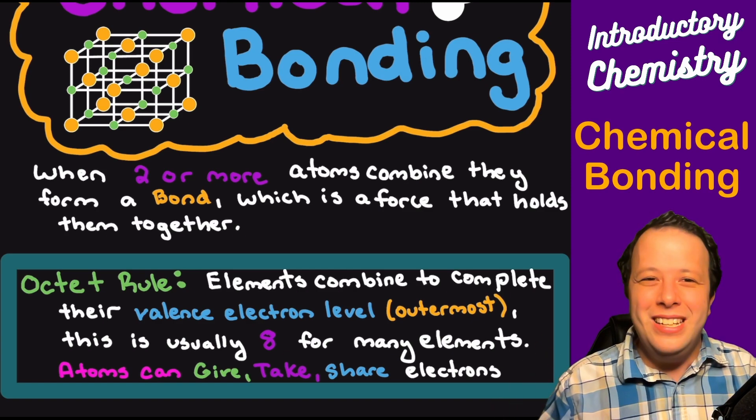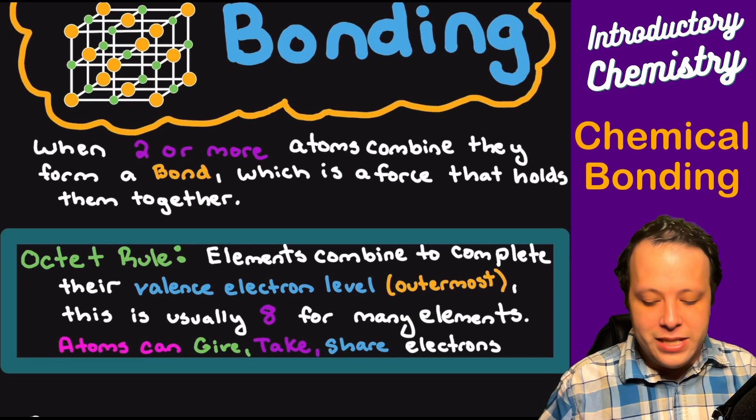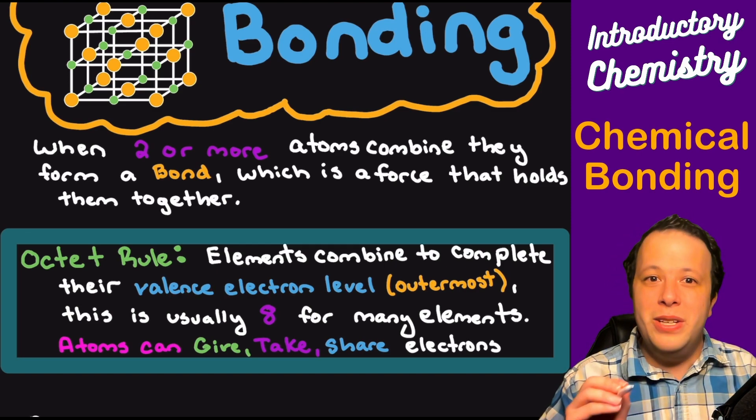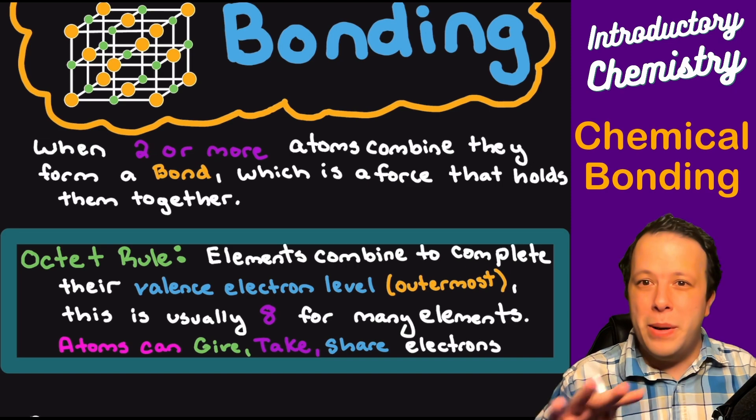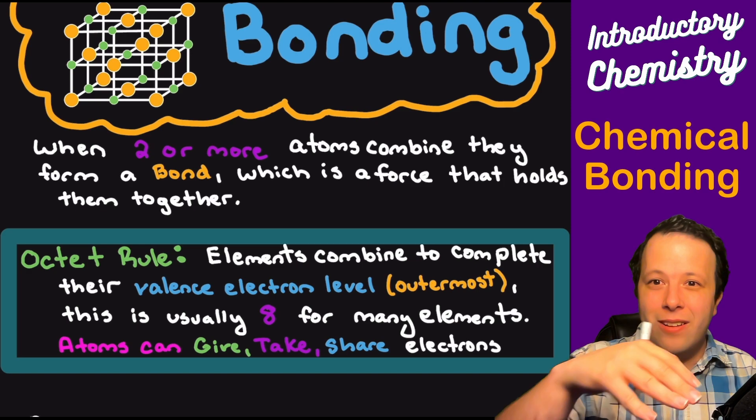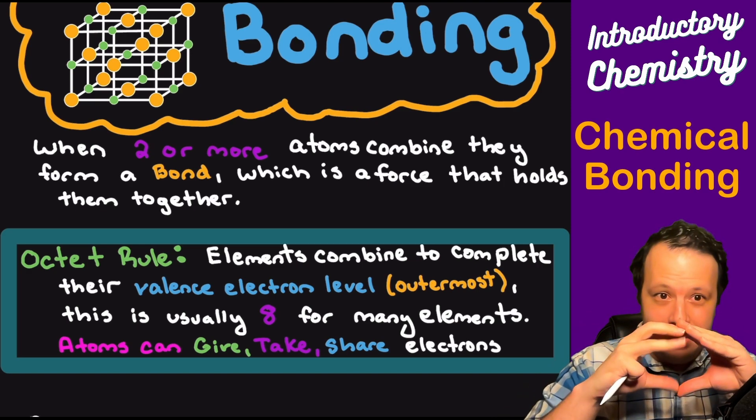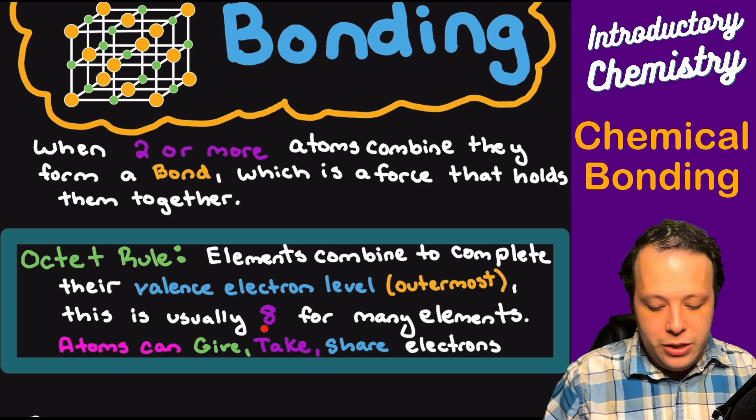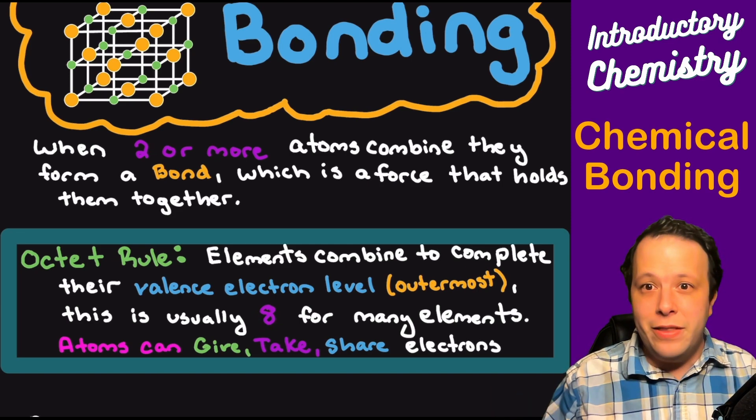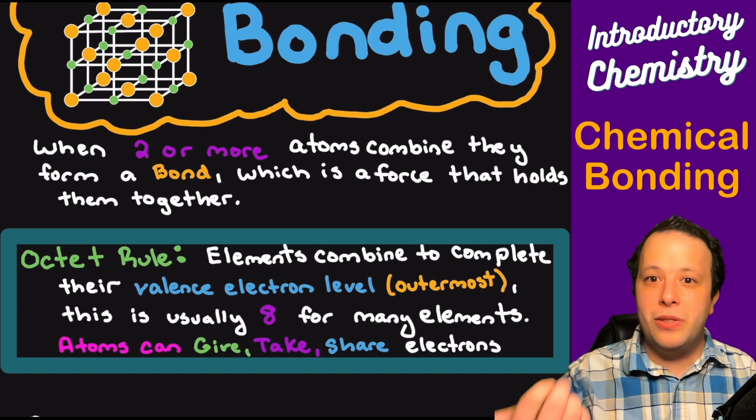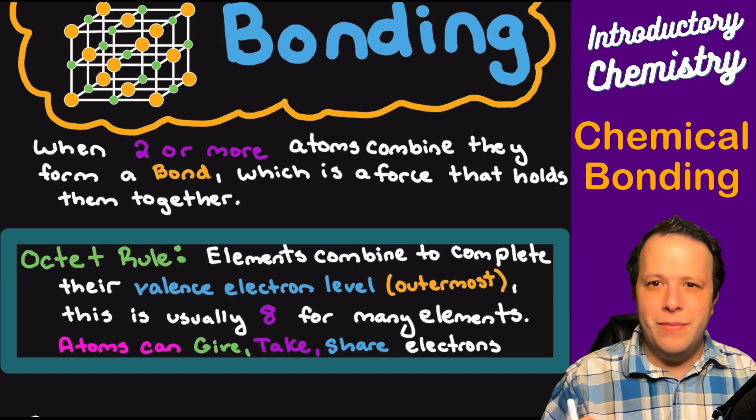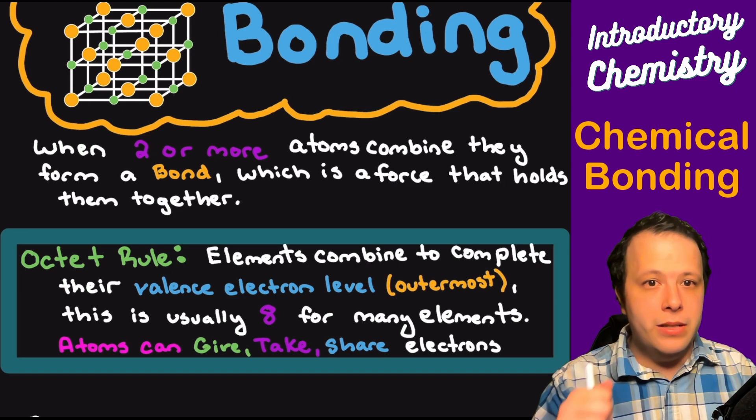So how can you do that? Elements are going to combine, meaning that when this happens we will fill our valence level. Remember, valence is your highest quantum number, your outermost layer. Think of an onion—it's the outside of the onion. The goal is that you want to have eight electrons for these elements. Most of them want to have eight. There are exceptions which we'll talk about in other videos.